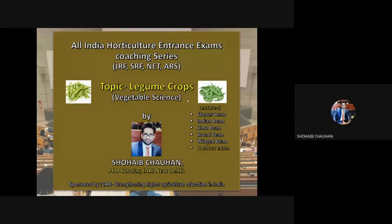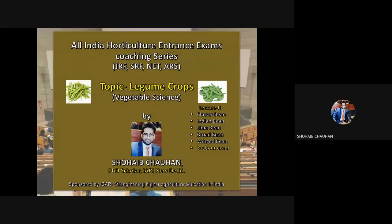Before starting the lecture, in legume crops the important things to remember are their botanical name, their progenitor, chromosome number, and their origin. Along with that, any unique variety in legume crops with respect to day length requirement, seed germination temperature, and seed rate. Also any unique substance — like in cluster bean the galactomannan is there, or in broad bean it is the only bean grown in winter season.